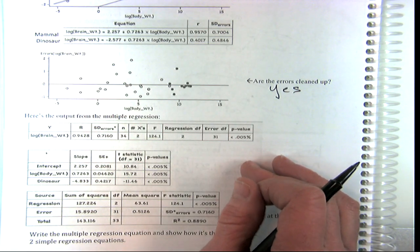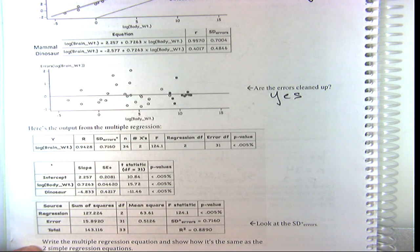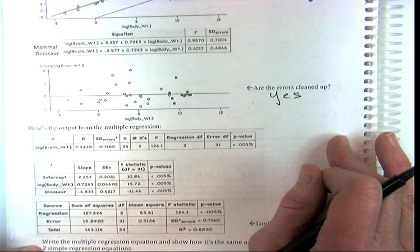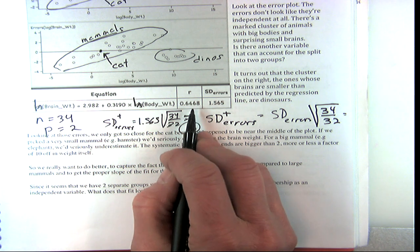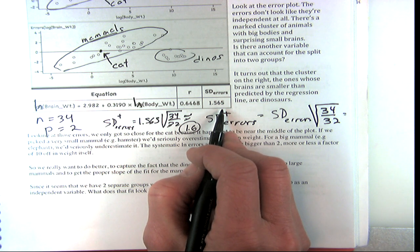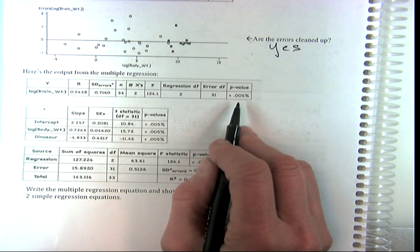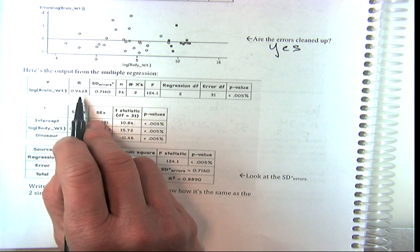Think about what's going to happen to the p-value, the R-squared, the standard deviations, the errors. We had an R of 0.6468 and that standard deviation of errors. Don't you think the R is going to go up and the errors will go down? And the p-value will go down too. We get a very small p-value. The standard deviation of errors went down from about 1.6 to only 0.716. The R went up dramatically because now we have a much better fit and we don't have a violation of our assumptions.